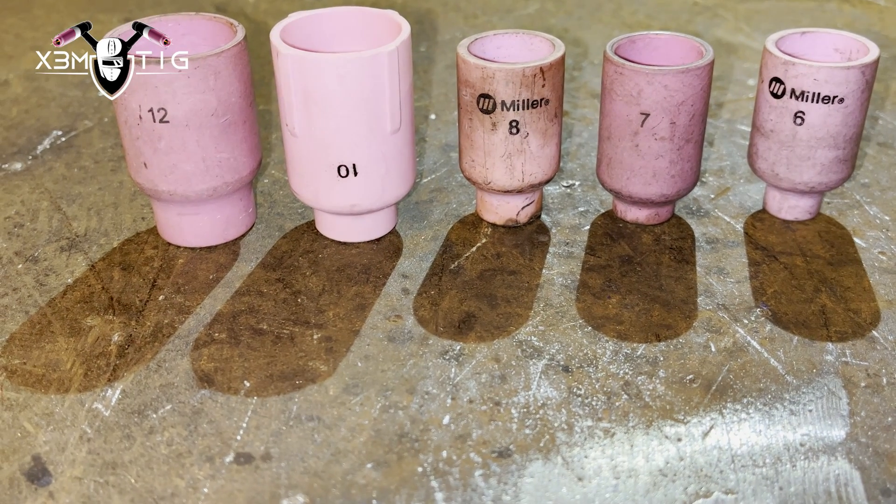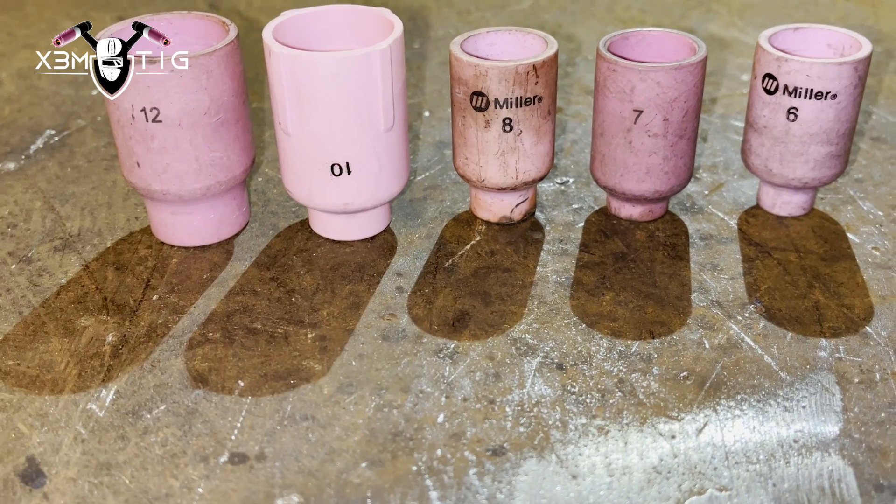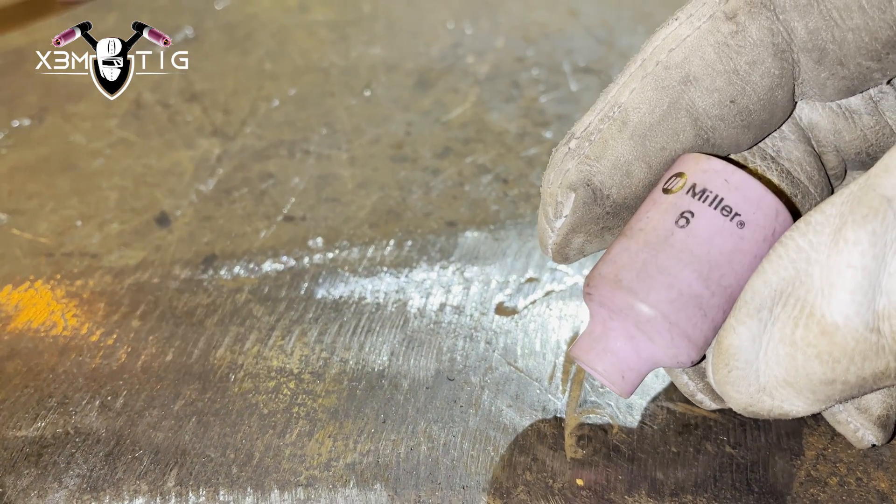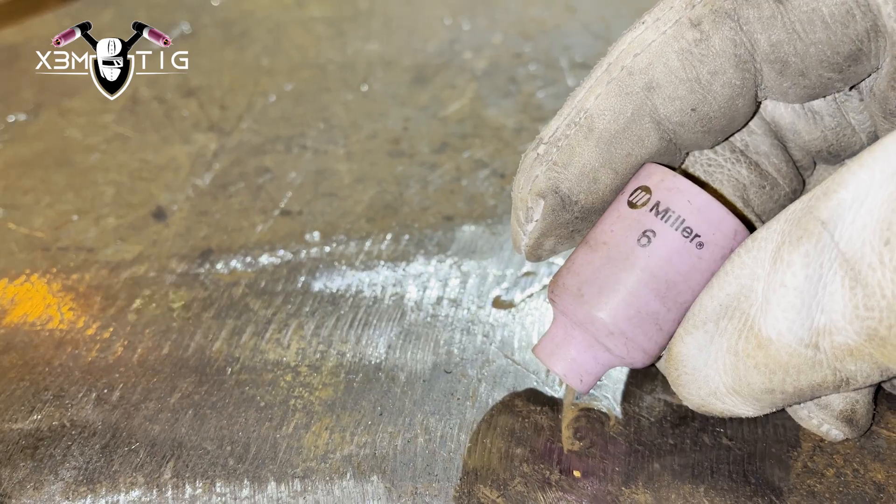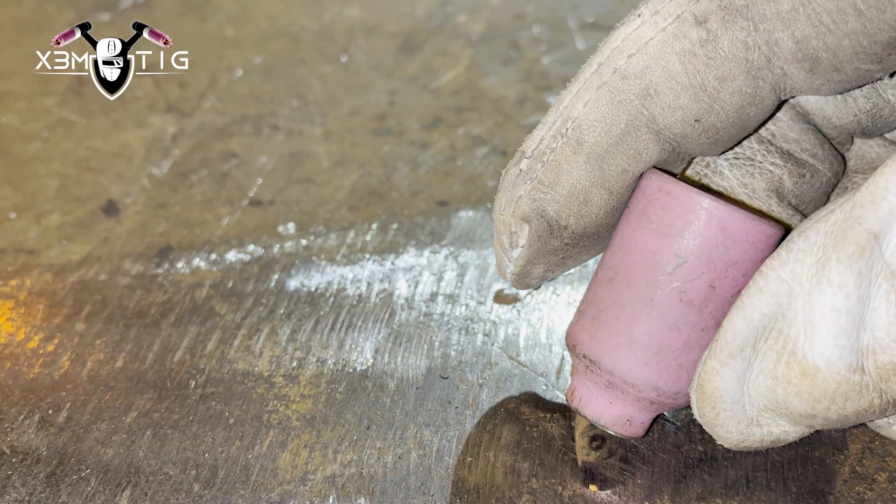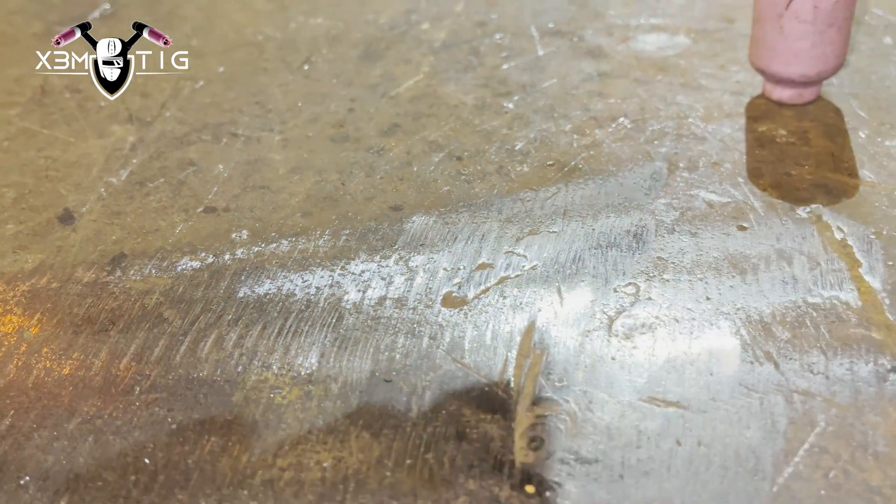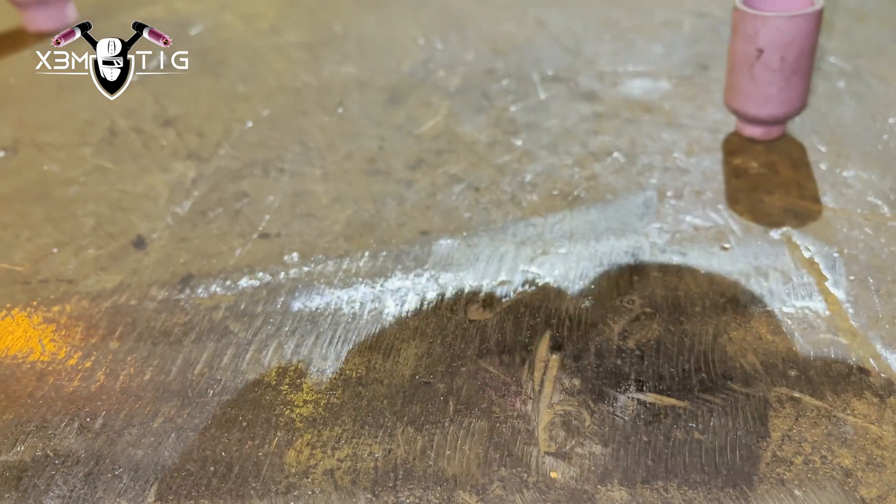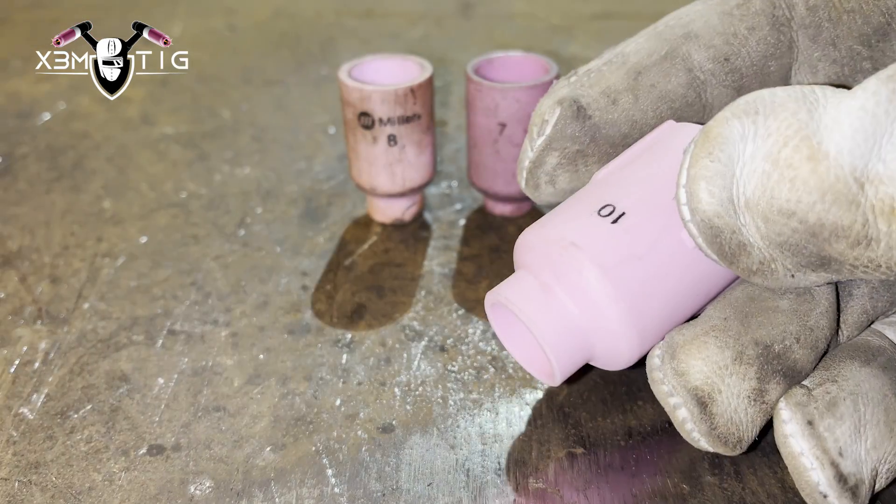Hello everyone and welcome to the Extreme Tick channel. For today's video I'm going to show you cup sizes 6, 7, 8, 10, and 12. I'm going to show the amps and the gas flow. We all know the cup size affects the shape and size of the weld bead as well as the amount of shielding gas coverage.